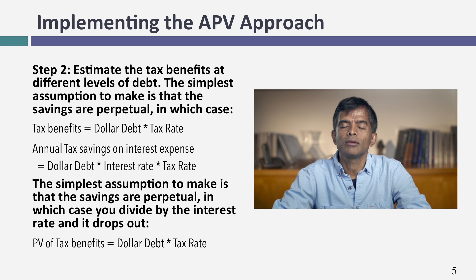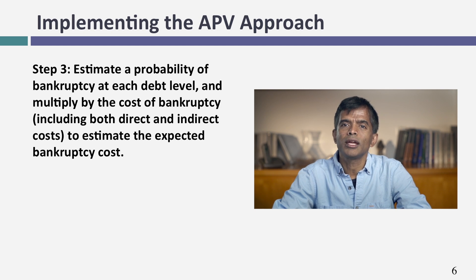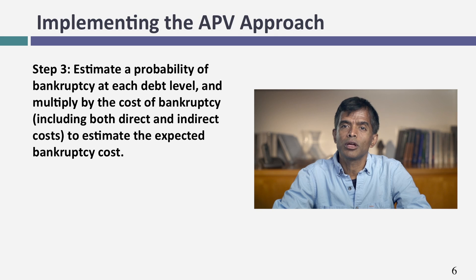The third and final step is messy. You've got to estimate the expected bankruptcy cost you're going to create by taking on that extra debt. You need to estimate the probability of bankruptcy at the new debt level and the cost of bankruptcy, which includes both the direct cost — what happens after you go bankrupt — and the indirect cost, which is what the perception that you're in trouble creates. Most people who claim to use the APV approach skip this third step, add only the tax benefits, and ignore bankruptcy costs. If you do that, your value will always increase as you borrow more, because you're counting the good stuff but not the bad stuff.